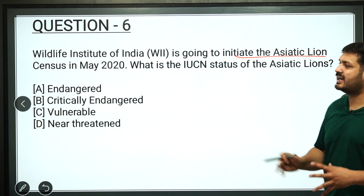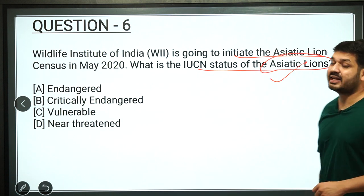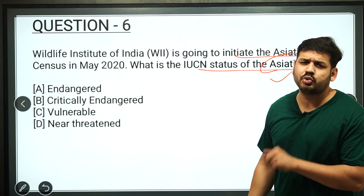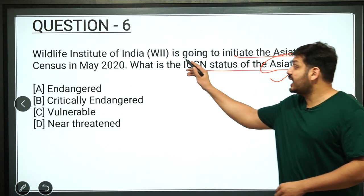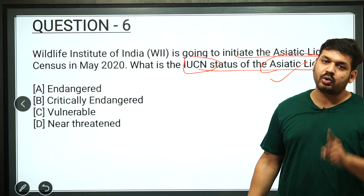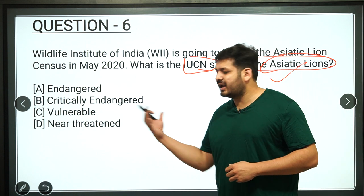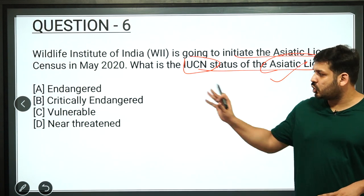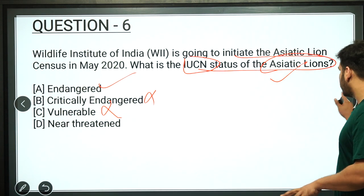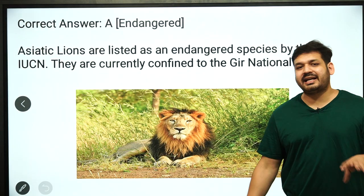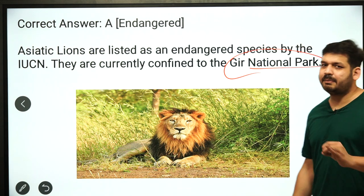The Asiatic Lion census question asks about lions which are in the news and are found in Gujarat. You should know their IUCN status — this is very important. Comment in the box the IUCN full form and IUCN headquarters. The IUCN status of Asiatic Lions is 'Endangered' — not critically endangered, not vulnerable. They are confined to Gujarat's national park.